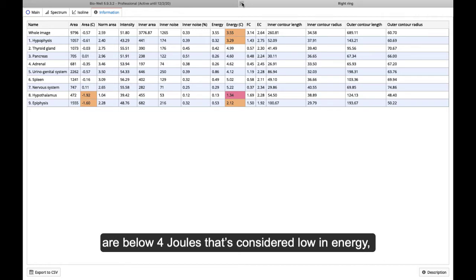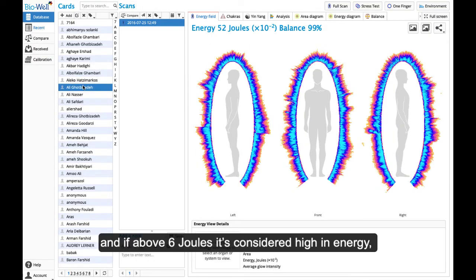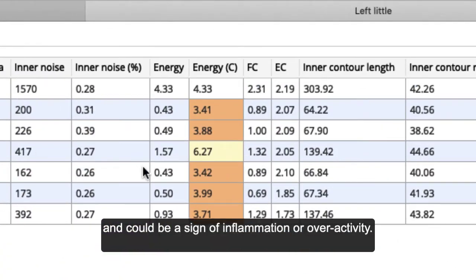If values shown are below 4 joules, that's considered low in energy. And if above 6 joules is considered high in energy and could be a sign of inflammation or overactivity.